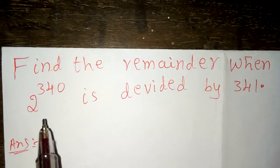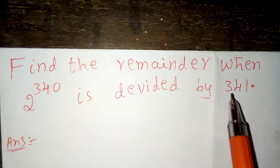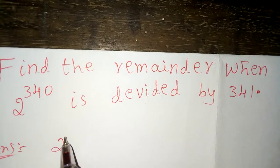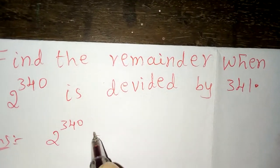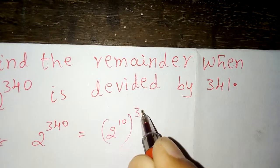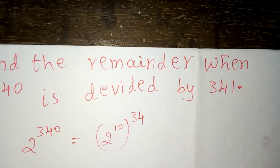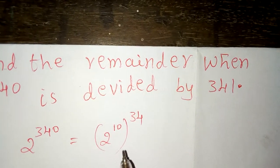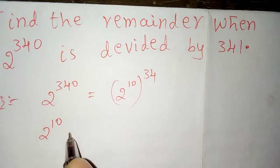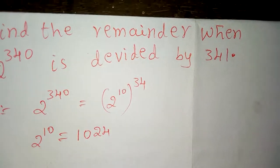Find the remainder when 2 raised to 340 is divided by 341. 2 raised to 340 can be written as 2 raised to 10 whole raised to 34. Now the value of 2 raised to 10 is 1024.